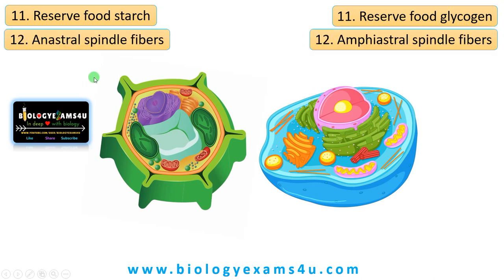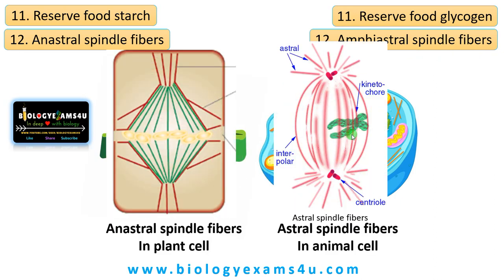The twelfth difference: anastral spindle fibers are present in plant cells whereas amphiastral spindle fibers are present in animal cells. In plant cells there is no centrosome, therefore asters — star-shaped structures that form around each pair of centrioles during cell division — are absent. The microtubule organizing center positions the spindle fibers. In animal cells it is called amphiastral because two asters are present on both poles. In plant cells it is called anastral because asters are absent.